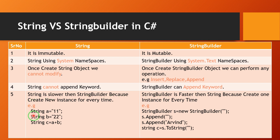For example, with String: string a equals 11, string b equals 22. When we create the first variable, memory creates one instance for variable a, a new instance for variable b, and again a new instance for variable c. That's why String is slower than StringBuilder.